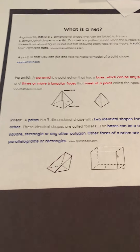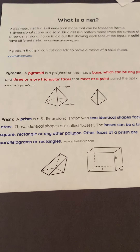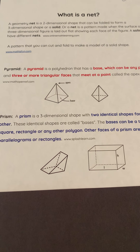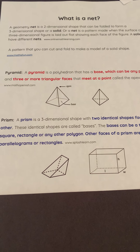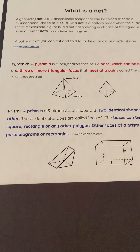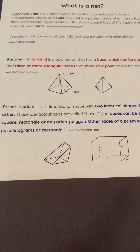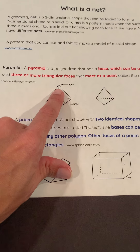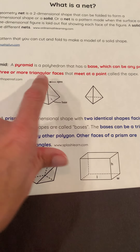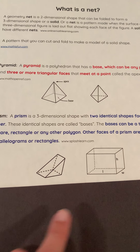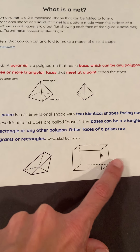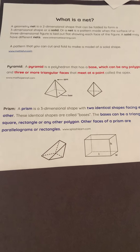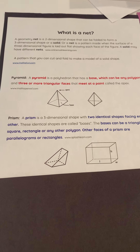Remember, a geometry net is a two-dimensional shape that can be folded to form a three-dimensional shape. We've looked at several examples, focusing on the difference between a pyramid and a prism. It's a pyramid if it has an apex — going to a point, connected with triangles. It's a prism if it's connected with rectangles. Remember, the bases can be any type of shape. Now you'll get to practice some on your own.